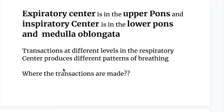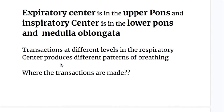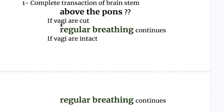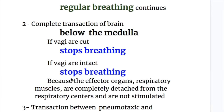Transections at different levels in the respiratory center produce different patterns of breathing. A complete transection of the brainstem above the pons does not affect breathing, and regular breathing continues whether the vagus nerves are cut or intact.